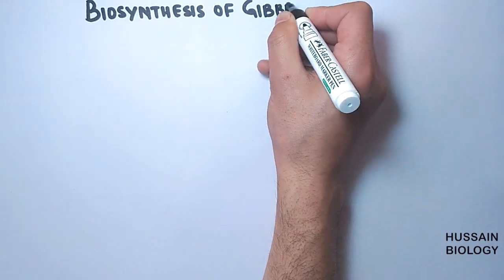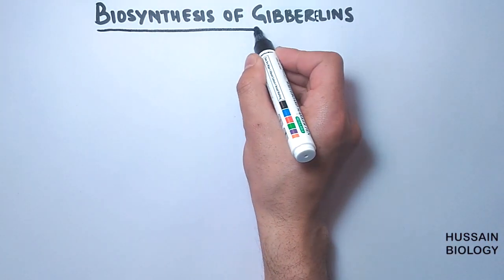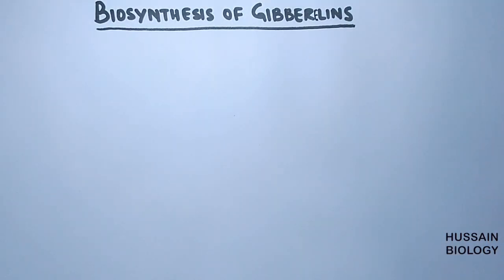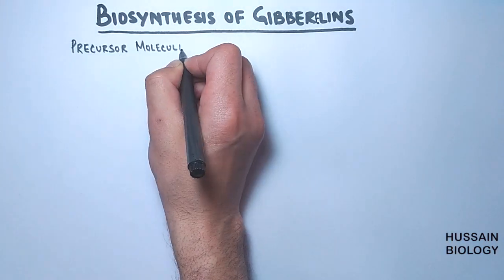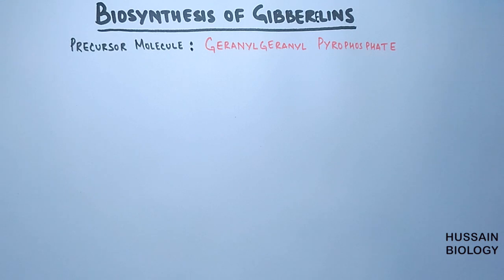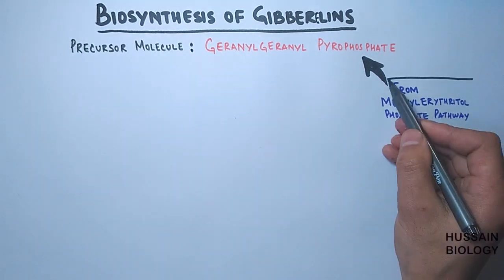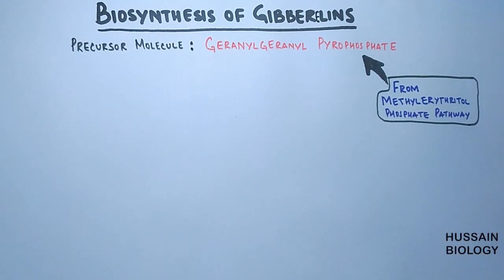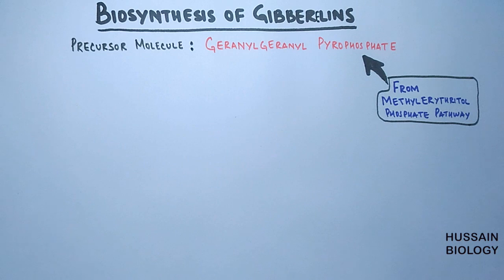First let's see the precursor molecule for the biosynthetic pathway. The precursor molecule for this pathway is geranylgeranyl pyrophosphate (GGPP), which itself comes from the methyl erythritol phosphate pathway, or simply the MEP pathway. Gibberellins have isoprenoid products as precursors, and these precursors are produced via the MEP pathway in higher plants, and this pathway is also seen in some bacteria.